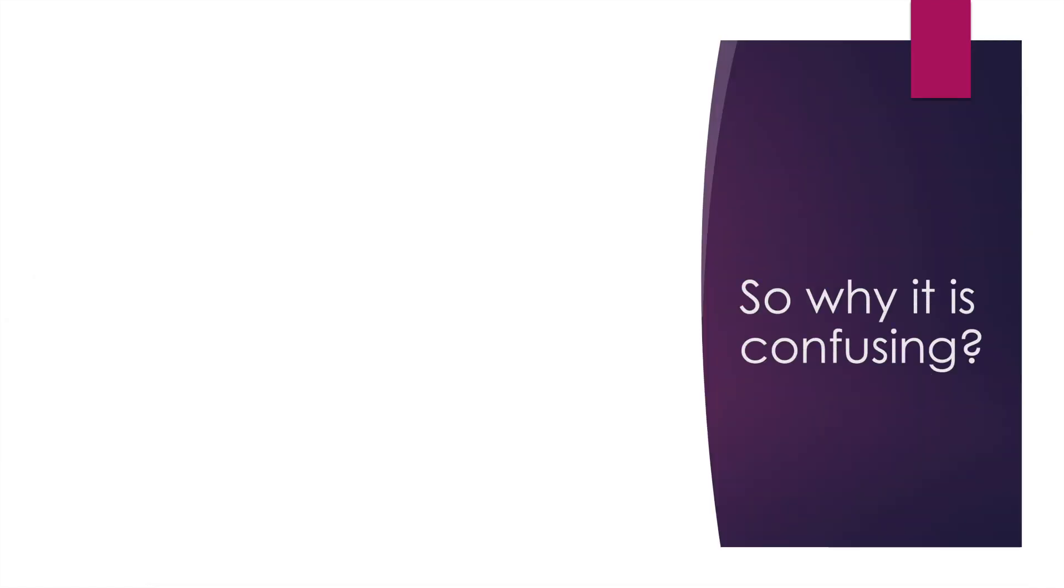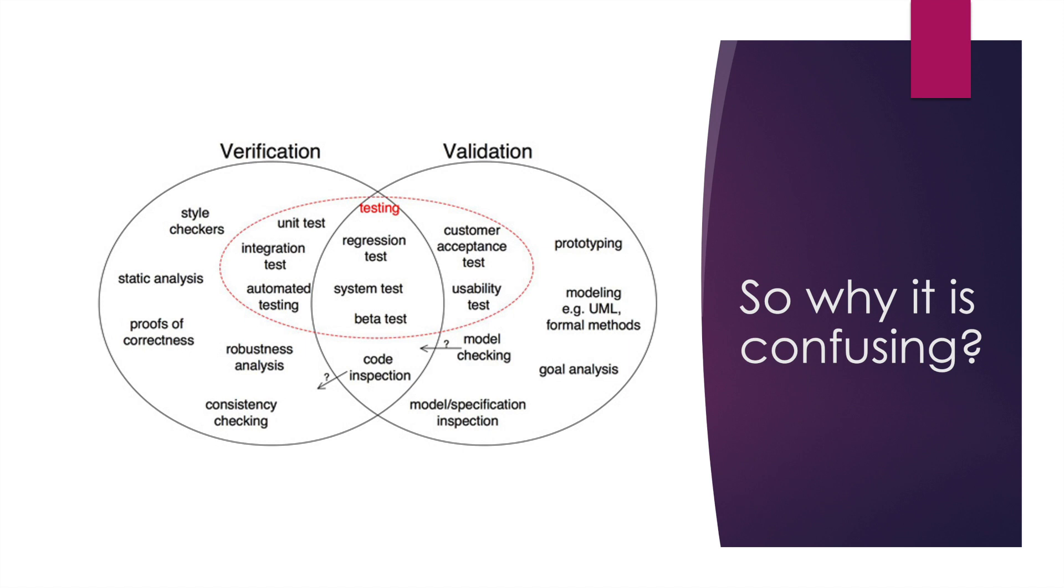Now the question is: why is it confusing? If you go through this terminology after this much information, you can say whatever we are doing during the product development is verification, and after development is validation. But this is not just right for all, because while doing validation we are also doing verification. Most of the time when we are doing system testing, we check if whatever the requirement was, it is the same or not. This comes in both.